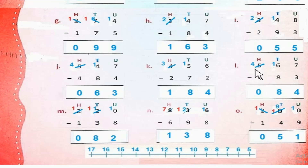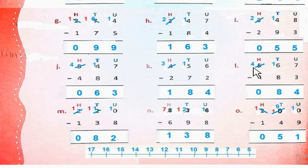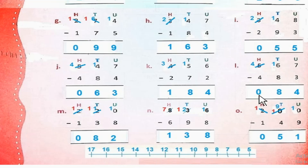Part L: 567 minus 483. 7 minus 3 = 4. 6 से 8 minus नहीं होता। So हम 5 से 1 borrow करेंगे — यह 4 रह जाएगा, और यह 16 tens हो जाएगे। 16 minus 8 = 8. 4 minus 4 = 0. So the answer is 84.